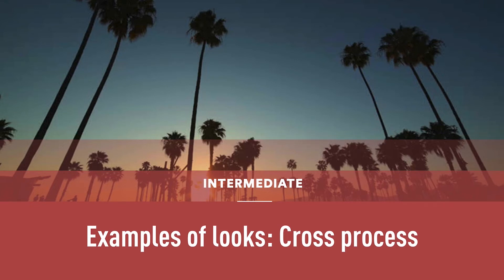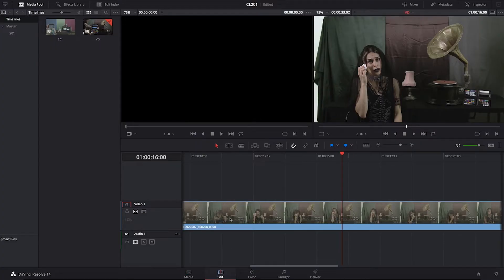Cross-processing effect was invented probably by accident — in a lab, someone processed a film negative with the wrong chemicals, or chemicals intended for a different type of film negative. It is still a very interesting effect, and even though we are digital cinematographers, sometimes we like to have this effect. I'd like to show you, as one of the classic looks, how to create it.